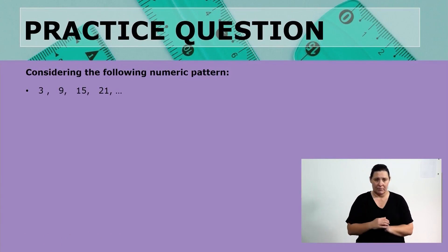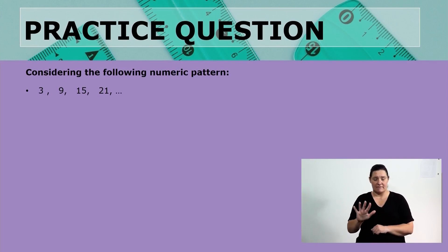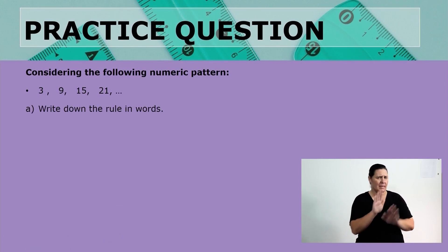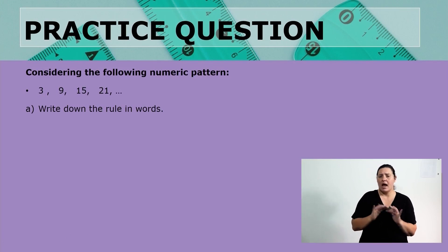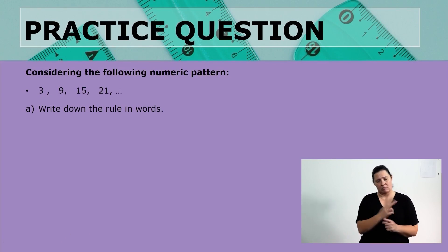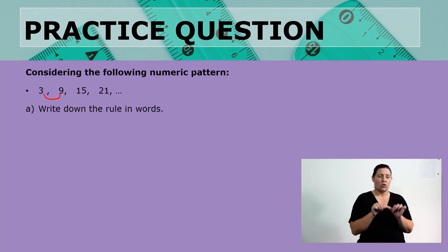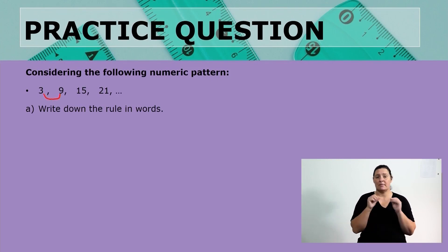So, let's look at the following pattern here. We have 3, 9, 15, and 21. Firstly, can we write down this pattern in words? If we look at what is happening here, how do I move from the first term to the next term? From 3 to 9, we can say 9 minus 3, which is that constant difference. So, 9 minus 3 gives us a 6.